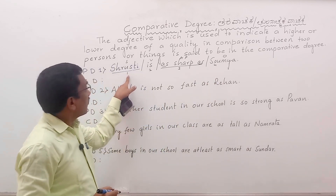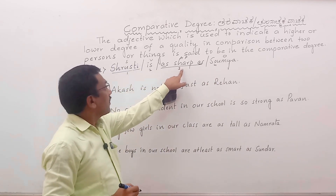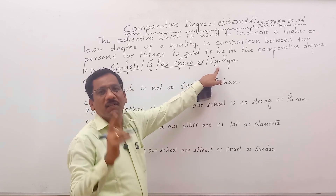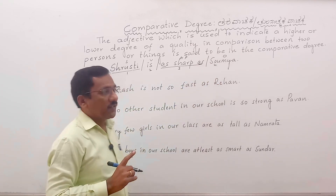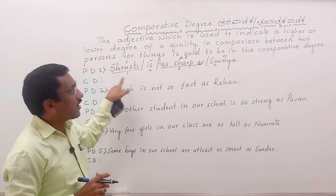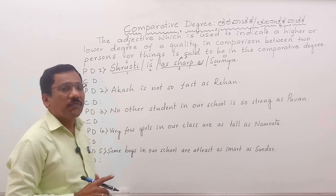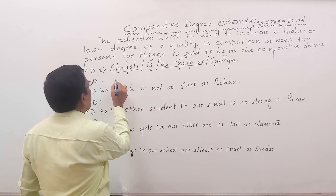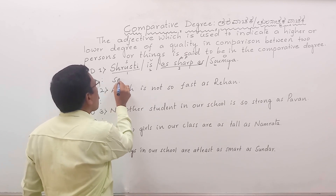One is subject, two is verb, three is adjective part, four is object. While changing the sentence into comparative degree, the object always comes first. Four comes first — that is Somya.